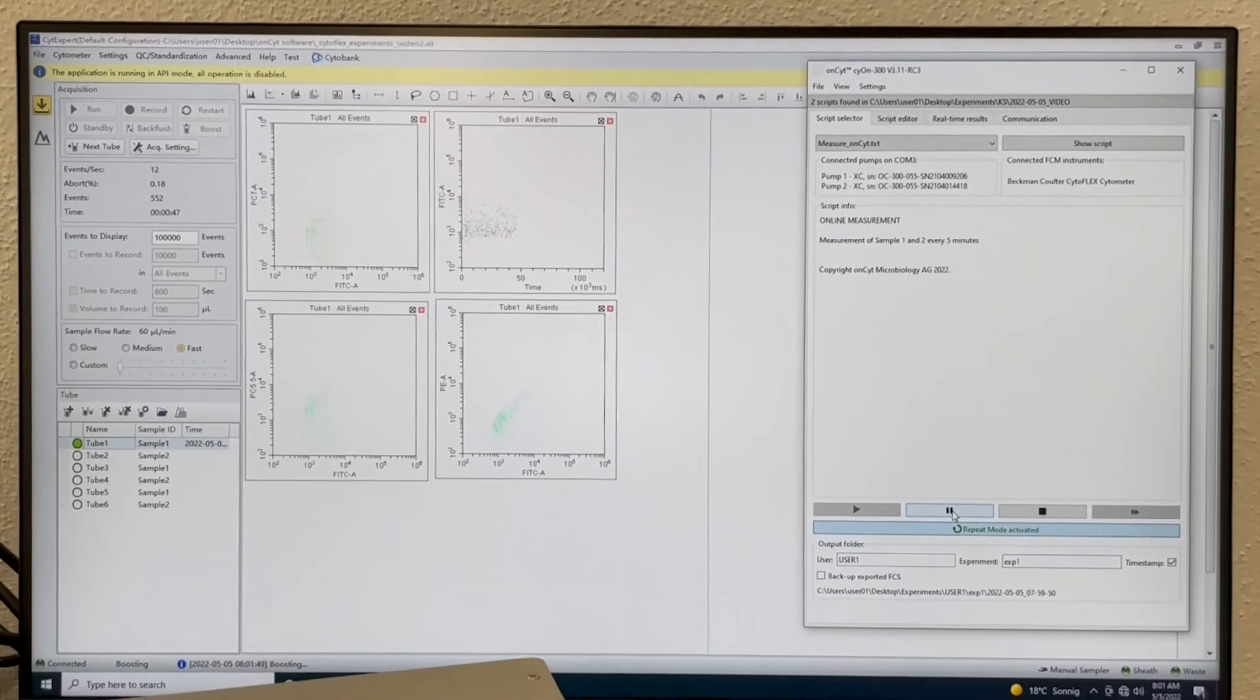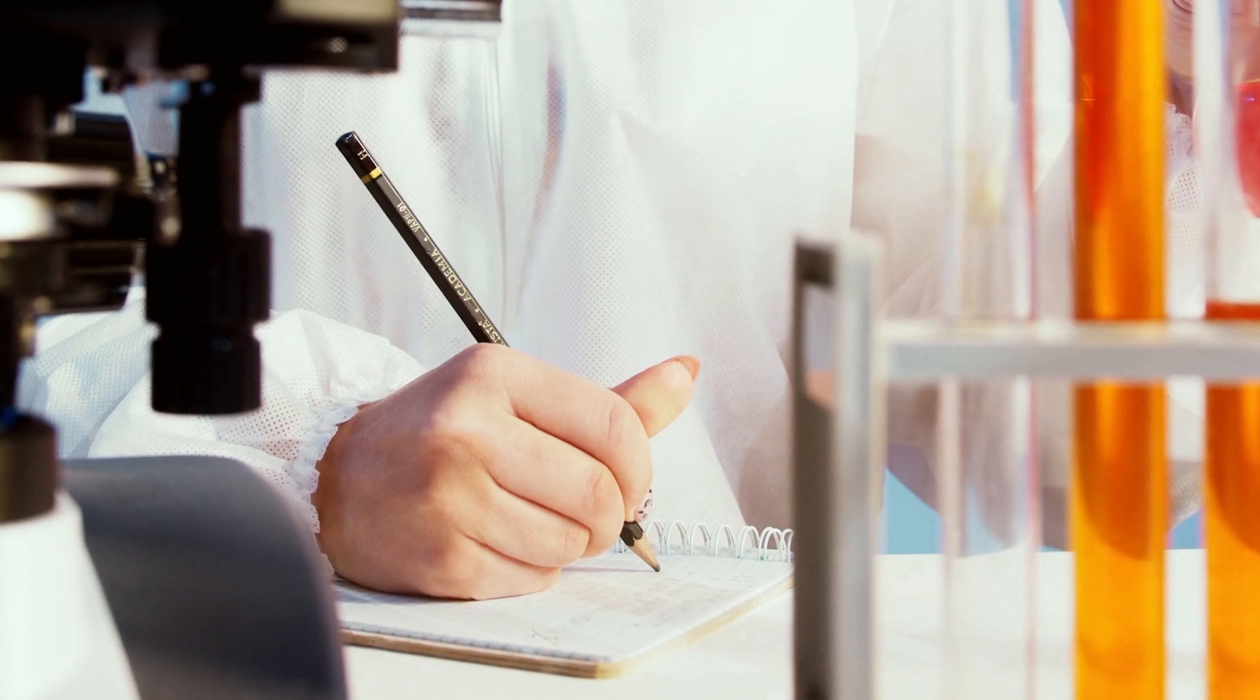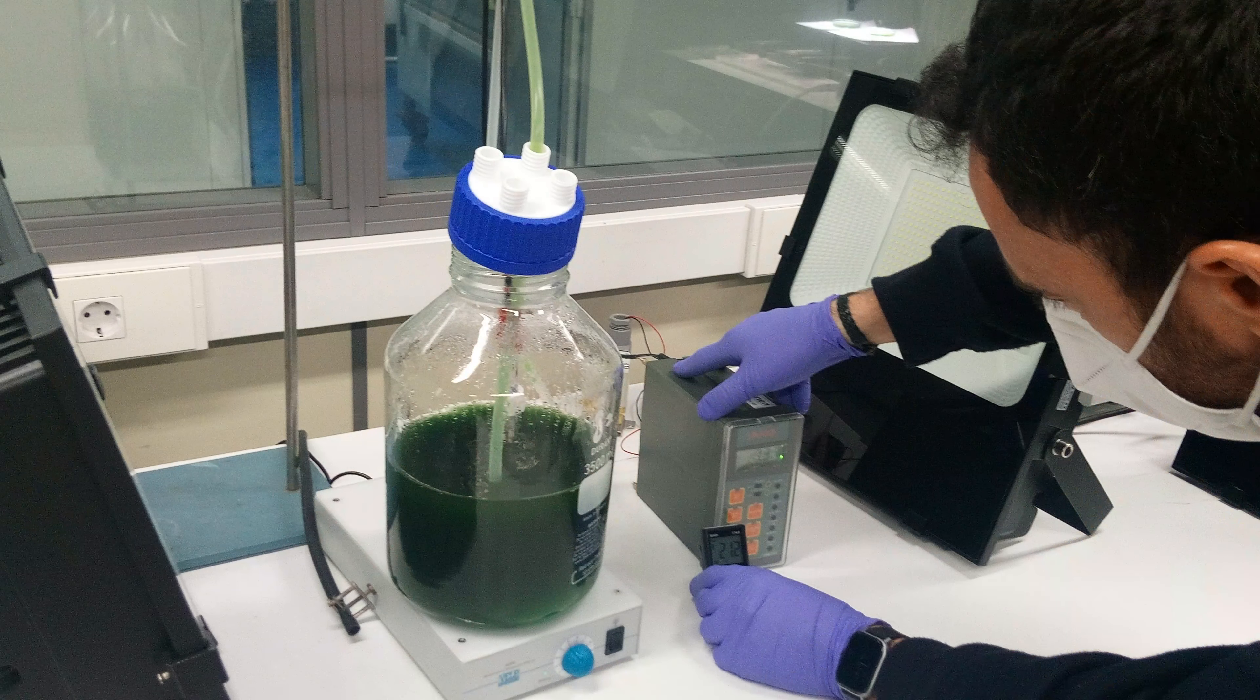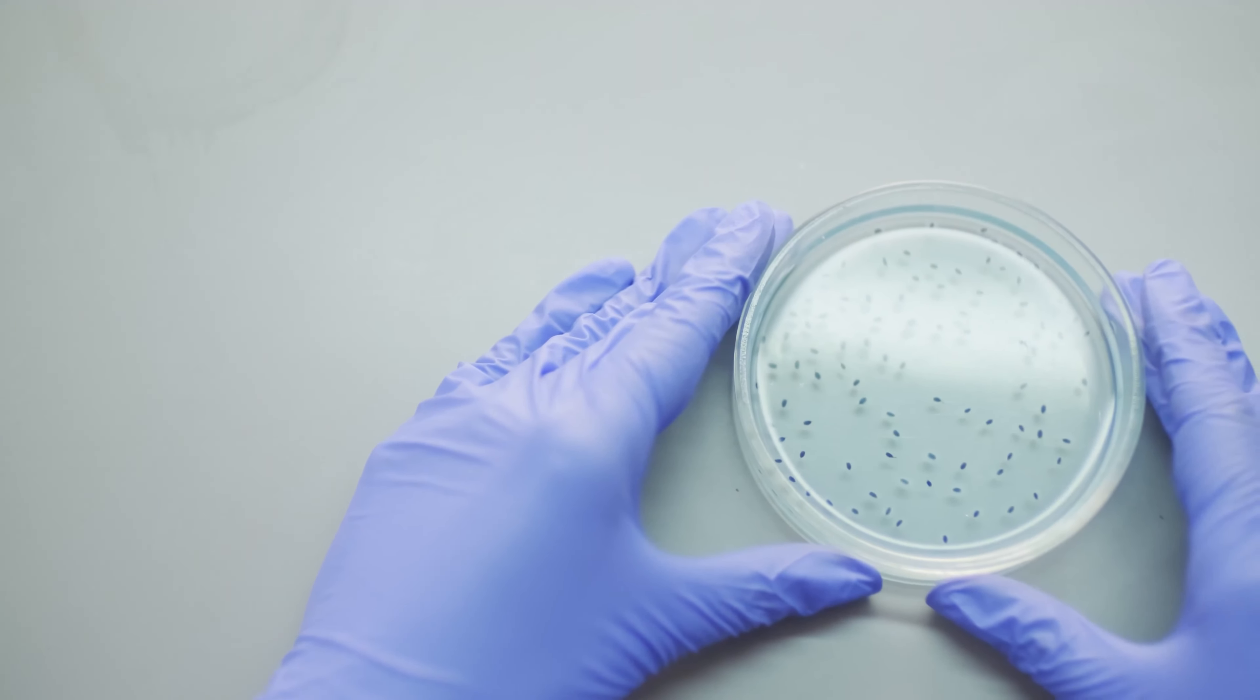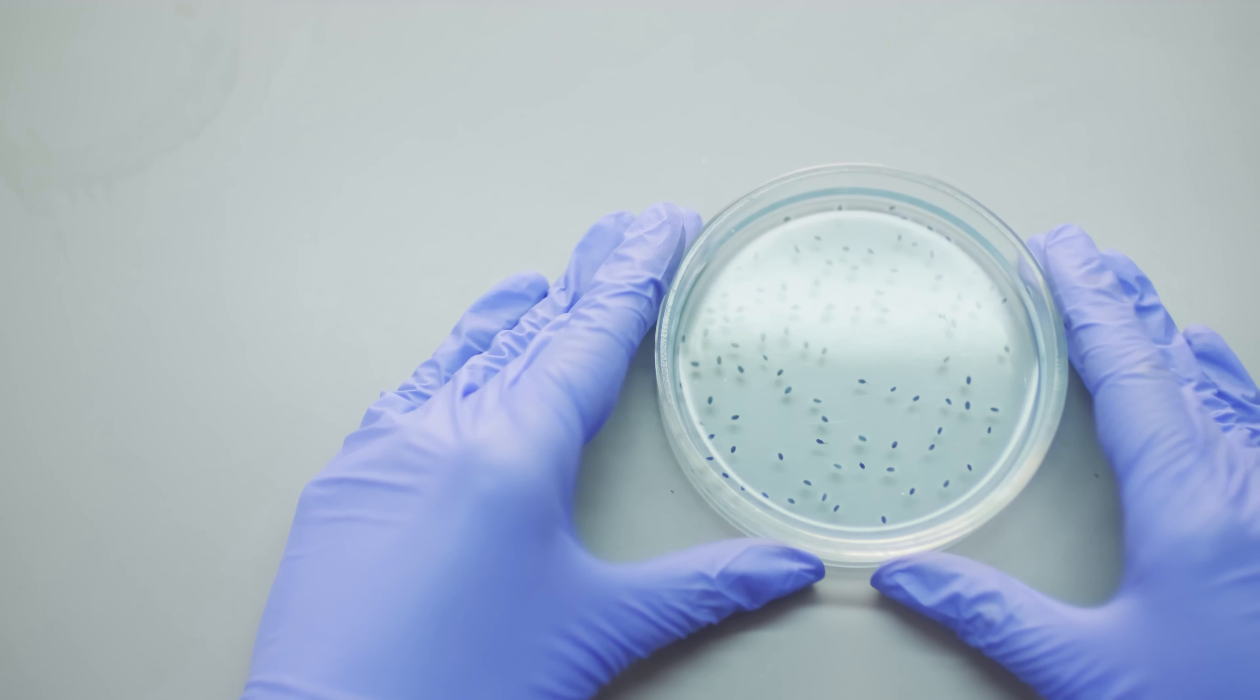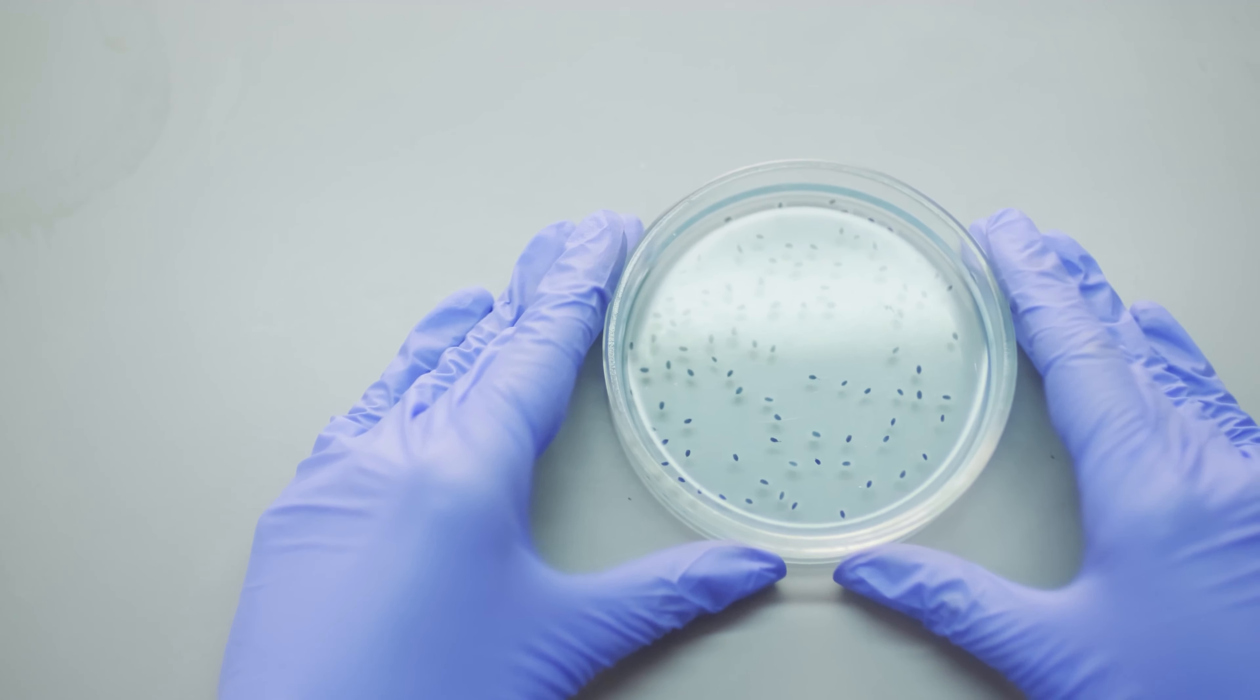Based on these results, we optimize defined microbial consortia with a few well-known microorganisms that play different roles. Some are there to harvest light and carbon, farmers. Some make specific target products, laborers, while others stabilize the microbial community, balancers.